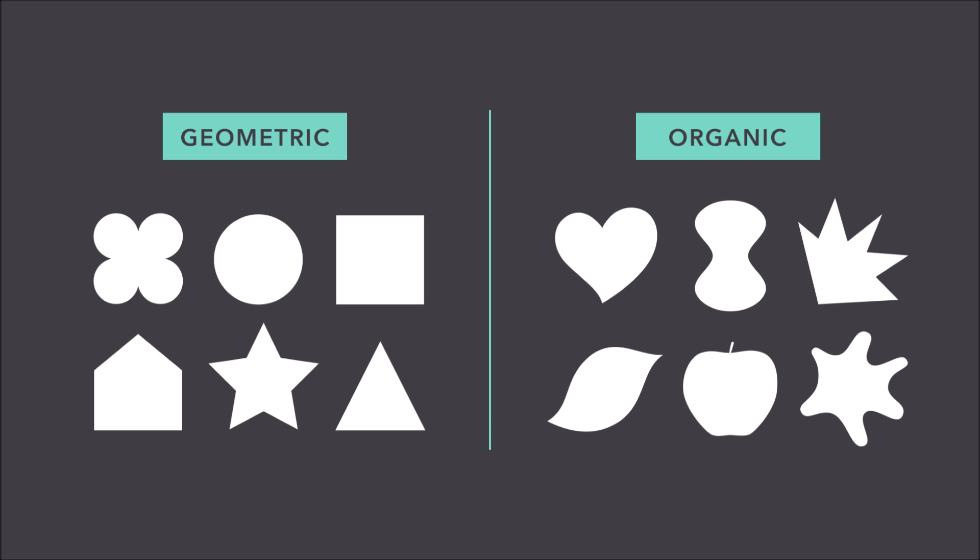Geometric shapes have perfect measurements, meaning a square will have perfect sides that are equally the same. So in many cases geometric shapes have very straight lines.